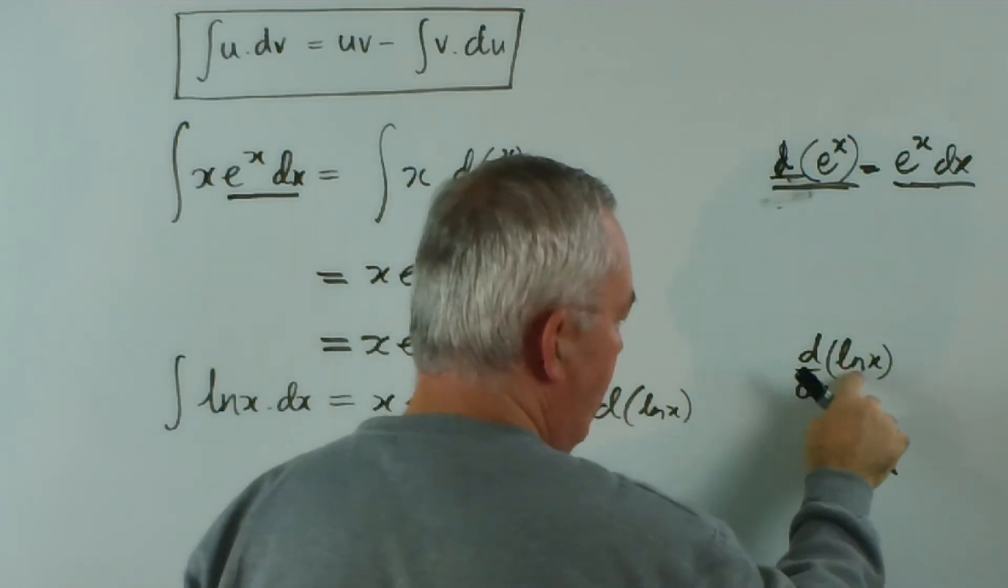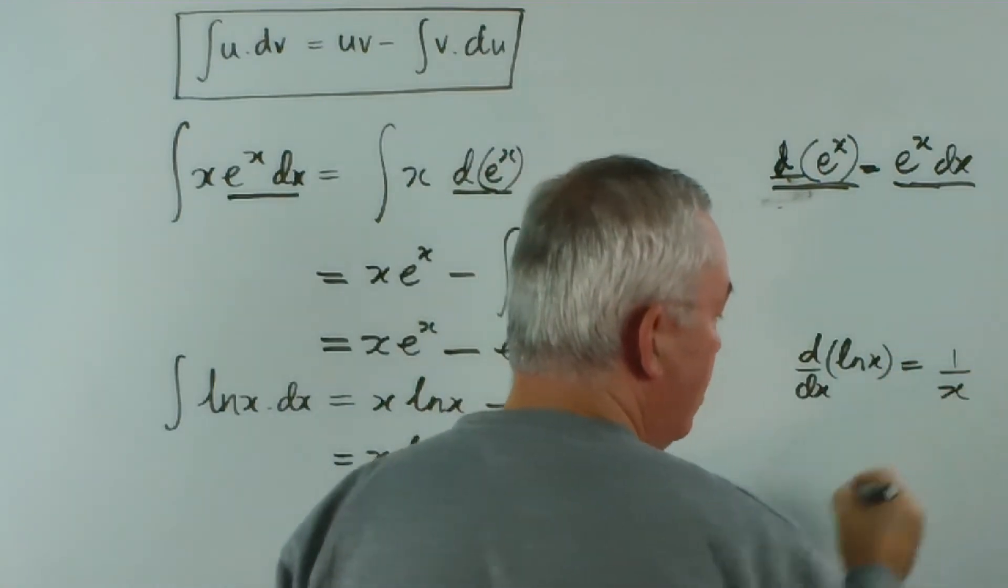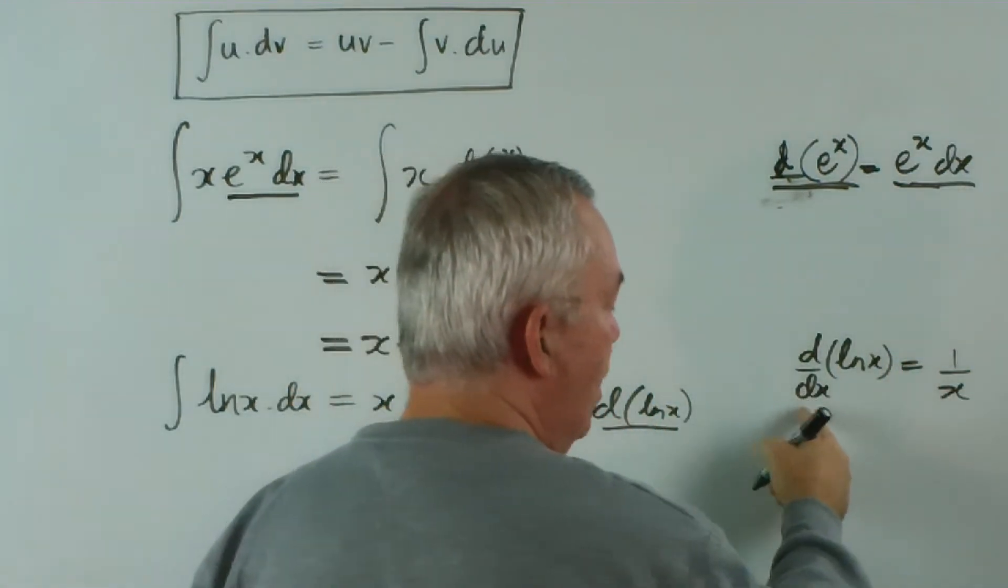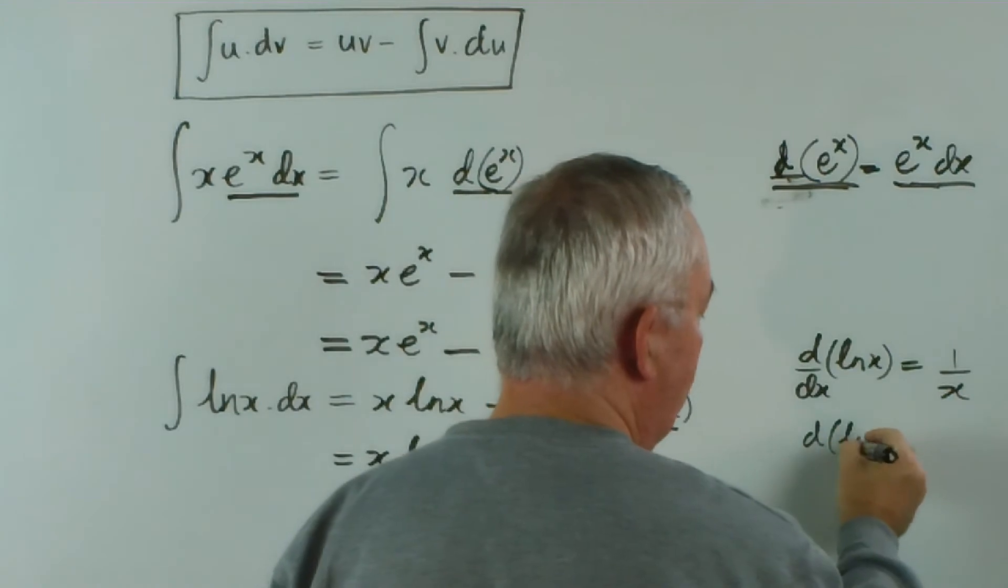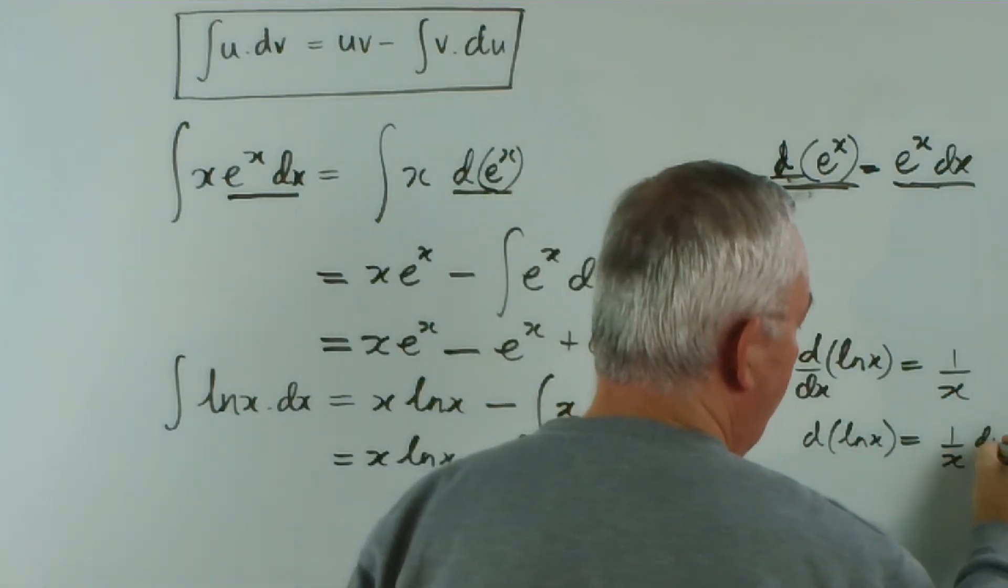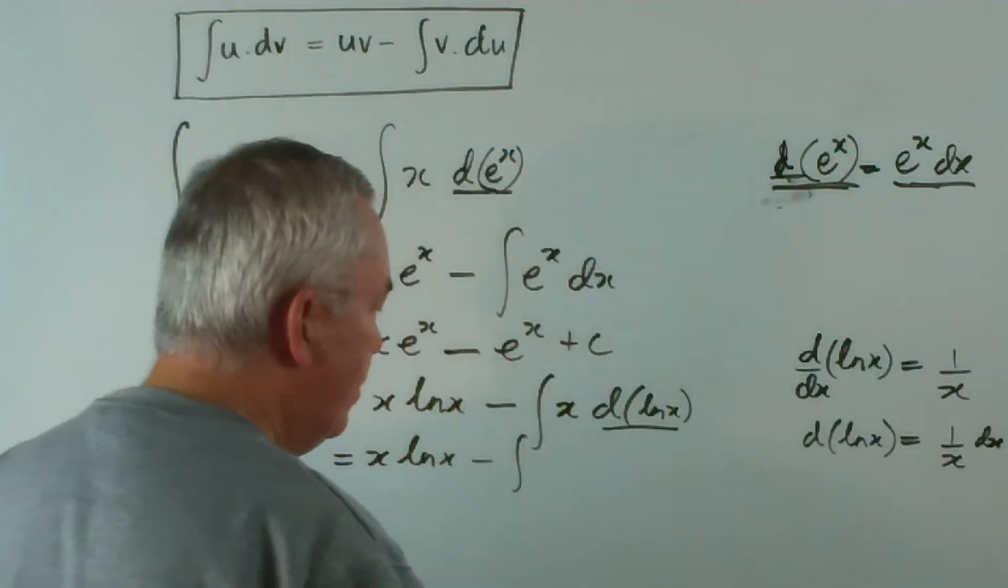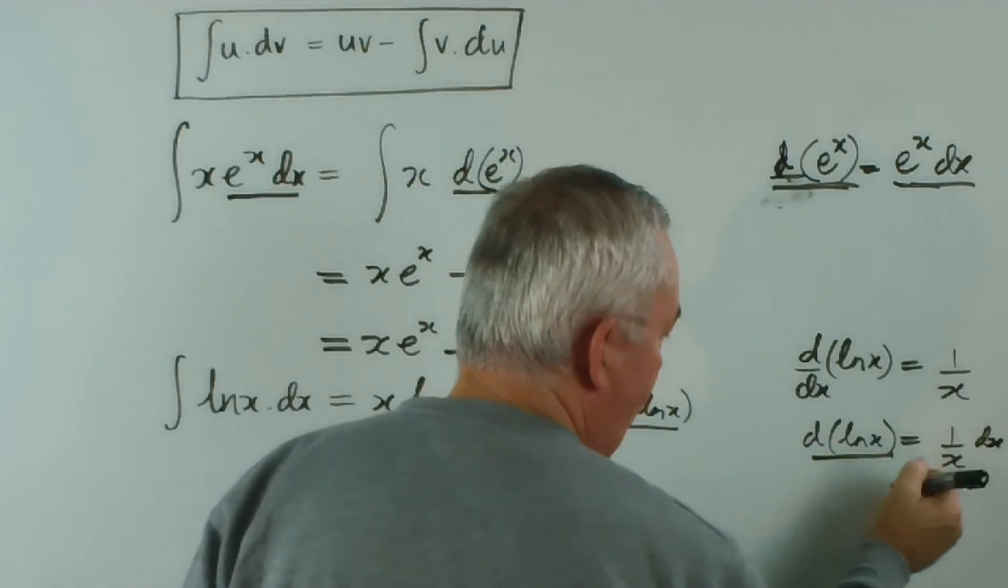because you can see that d(log x) is what we have here. Now, the derivative of log x is 1 over x, isn't it? And if I multiply both sides by dx, I get d(log x) equals dx over x. So, I can replace that with this.